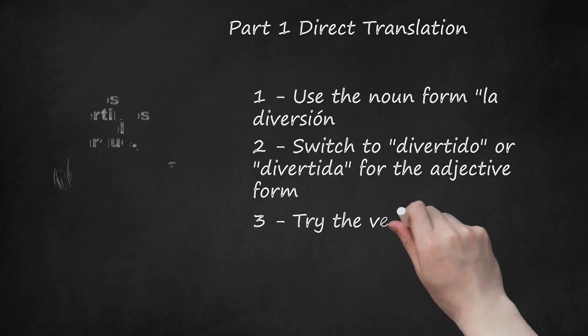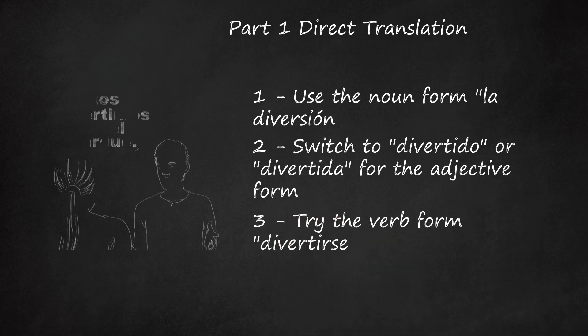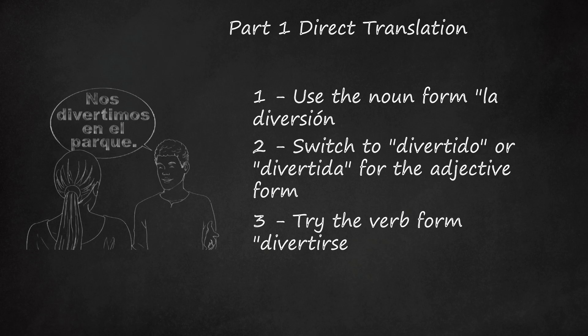3. Try the verb form 'divertirse.' Translated directly, this verb means to have fun. This is the best, most direct way to describe the action of having fun. Whenever you want to directly say that someone is having fun, you should use this verb. Do not pair the noun for fun, 'la diversión,' with the verb for have, 'tener.' This is an irregular, stem-changing verb, and it's also reflexive. That means you'll need to precede the conjugated verb with an appropriate pronoun based on the subject of the sentence.